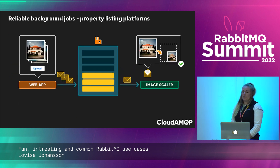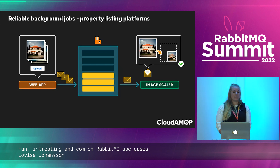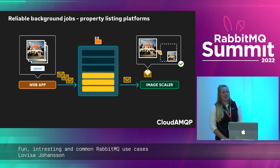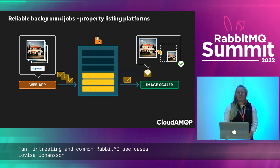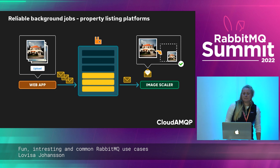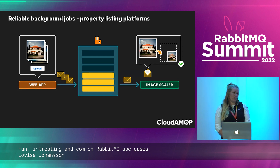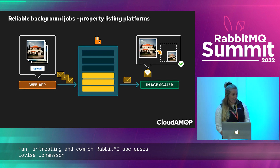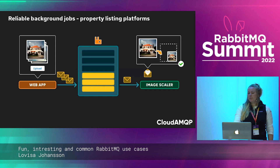Many are using RabbitMQ to allow their application to respond to requests quickly, rather than being forced to perform intensive tasks on the spot. One example is a property listing platform: when a real estate broker adds a new image of a property, an image scaling request is added to the queue. An image scaling service then grabs the task from the queue, scales the image, and makes it available on the website. Using message queues enables many images to be added at the same time by many different real estate brokers.